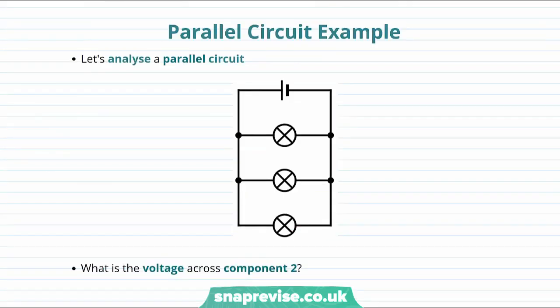Now it's time to practice some of the concepts that we've learnt in this video. Let's try and analyze a parallel circuit. Let's imagine that our cell creates a potential difference of six volts. And let's label our components, which in our case are light bulbs, components one, two and three.